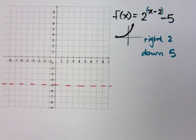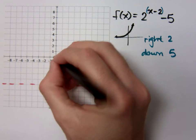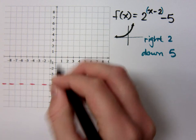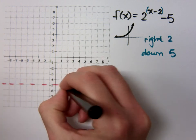Now, I want you to pay attention to where your new origin is. I was right here at the origin, but what did you say I needed to do? Right 2 and down 5. So this is going to act as my new origin.